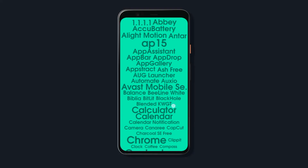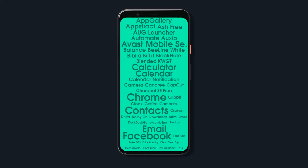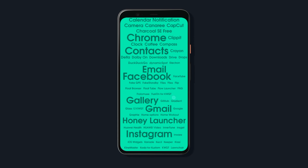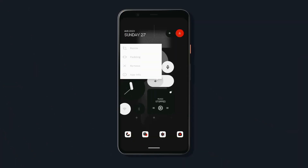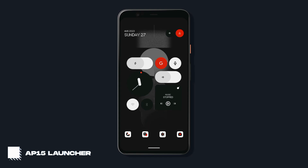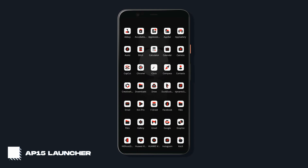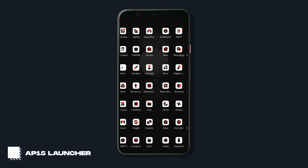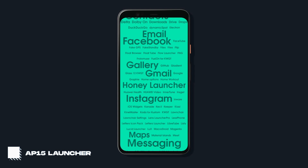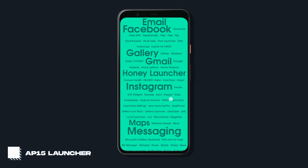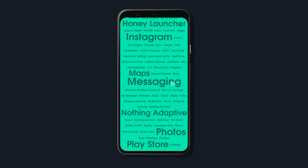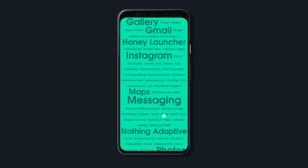So, if you're looking for something more extraordinary, then App 15 is the best fit. With this launcher, you don't get fancy icon pack or widget support. Instead, you get a single screen with all your app names arranged in different text sizes, which gives the launcher an artistic newspaper look.